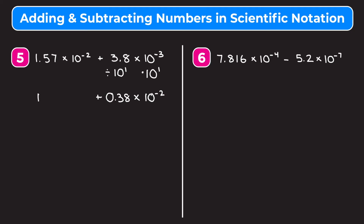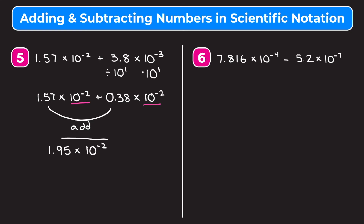I'm going to keep my first number as is: 1.57 times 10 to the negative second. Now because our powers of 10 are the same, we can just add the two numbers in front. 1.57 plus 0.38 gives us 1.95, and we multiply this by 10 to the negative second. So we get 1.95 times 10 to the negative second.